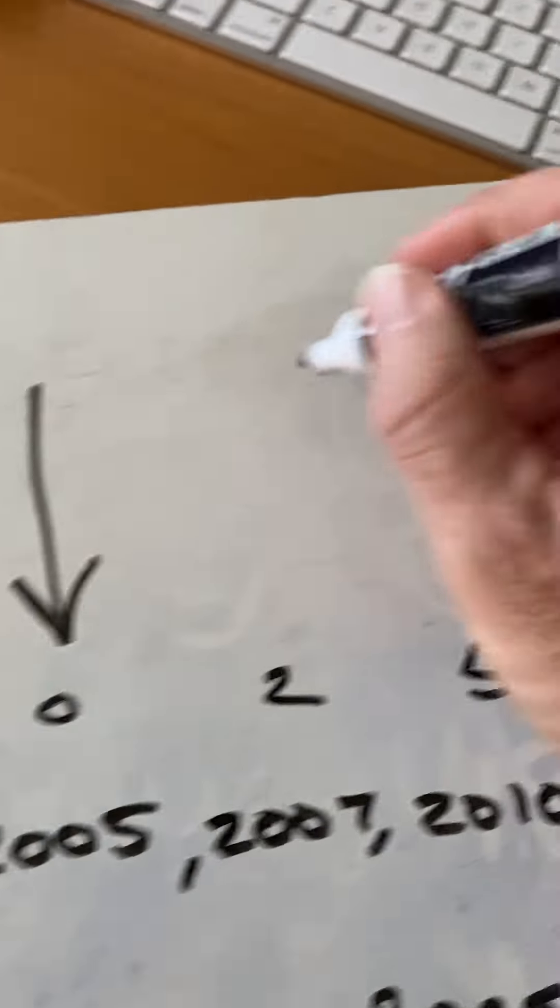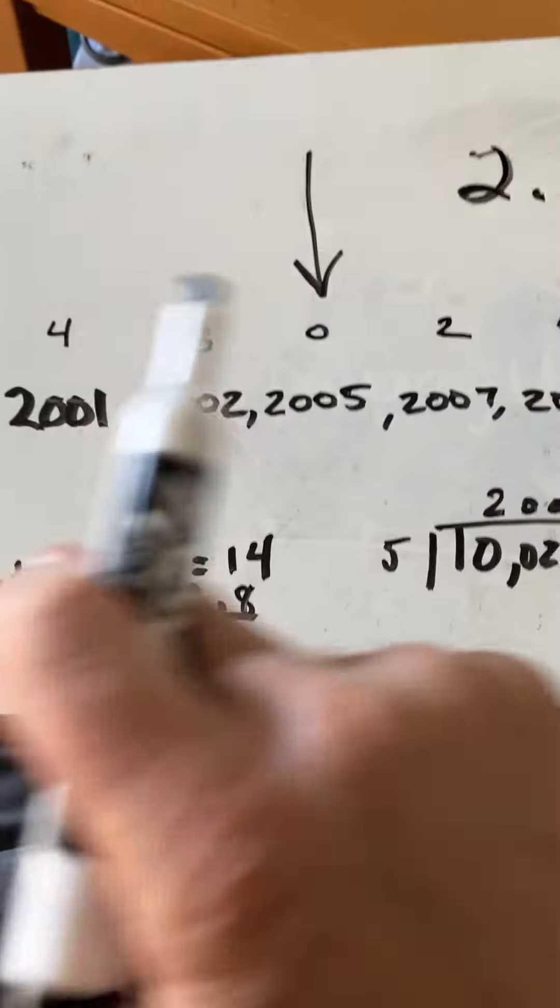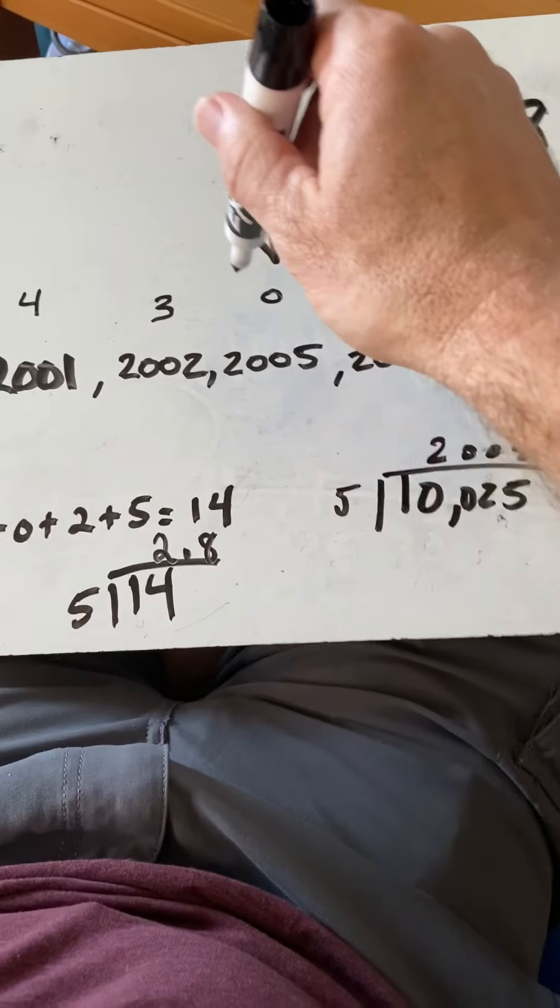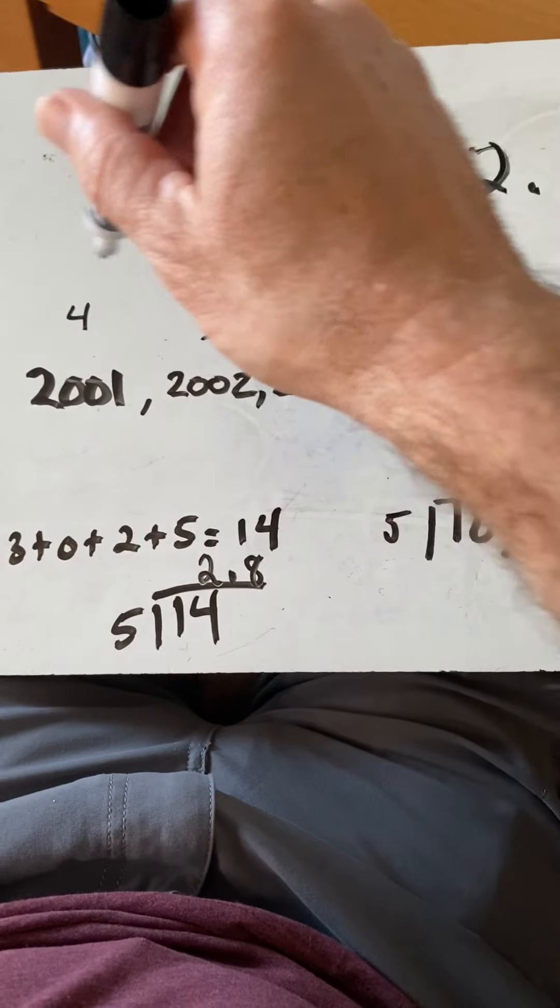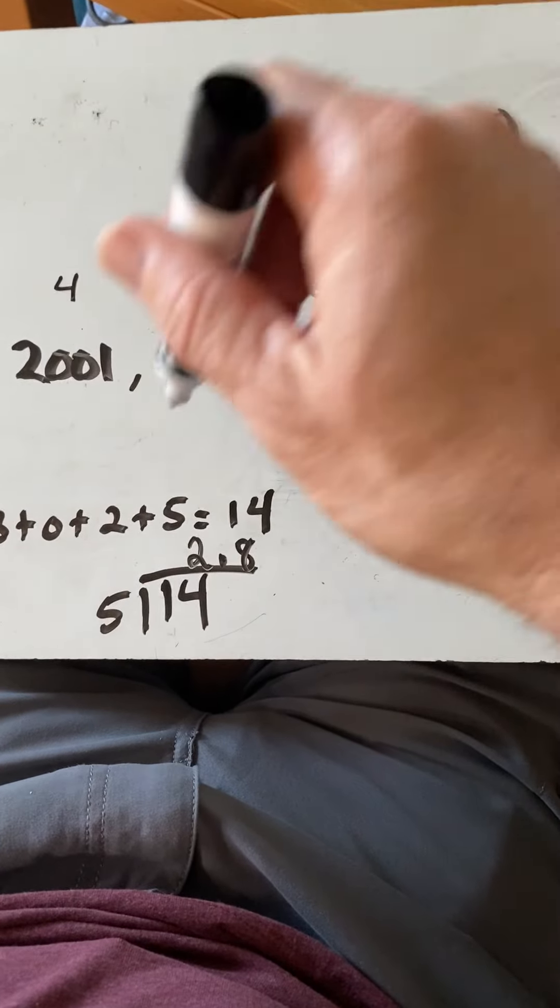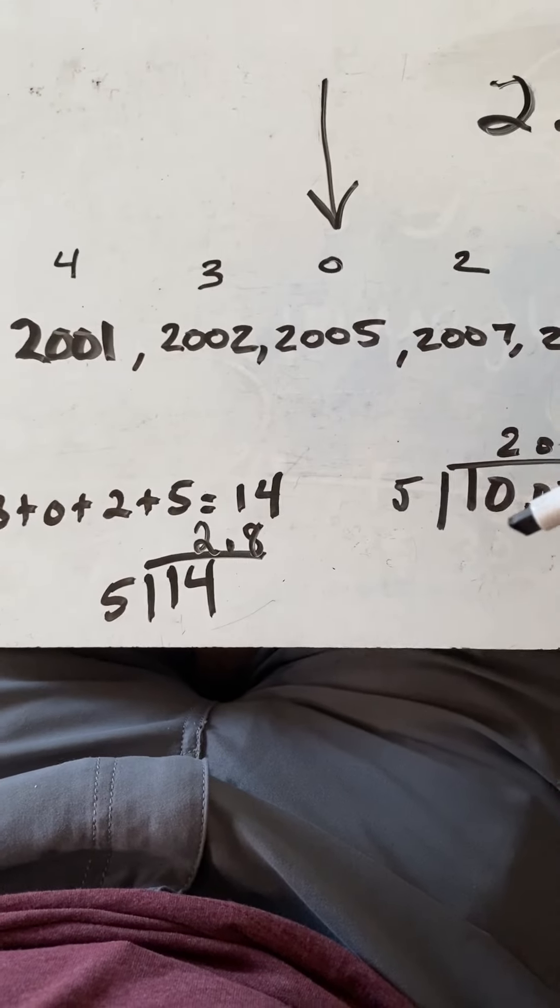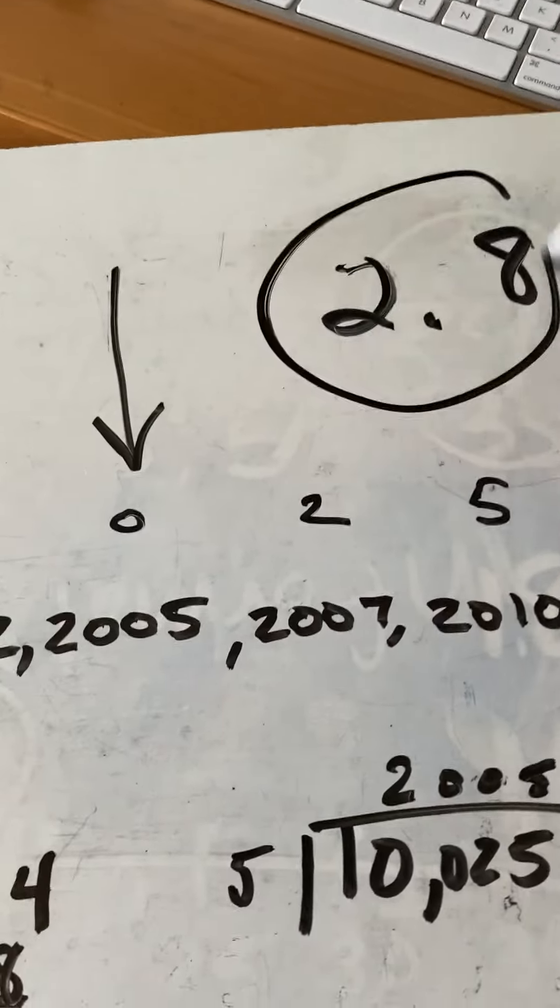So your answer is 2.8, and it's right there. So you have to find the mean of all the numbers, then the distance from the mean, and then we add those up and we get the mean of the distance: 2.8.